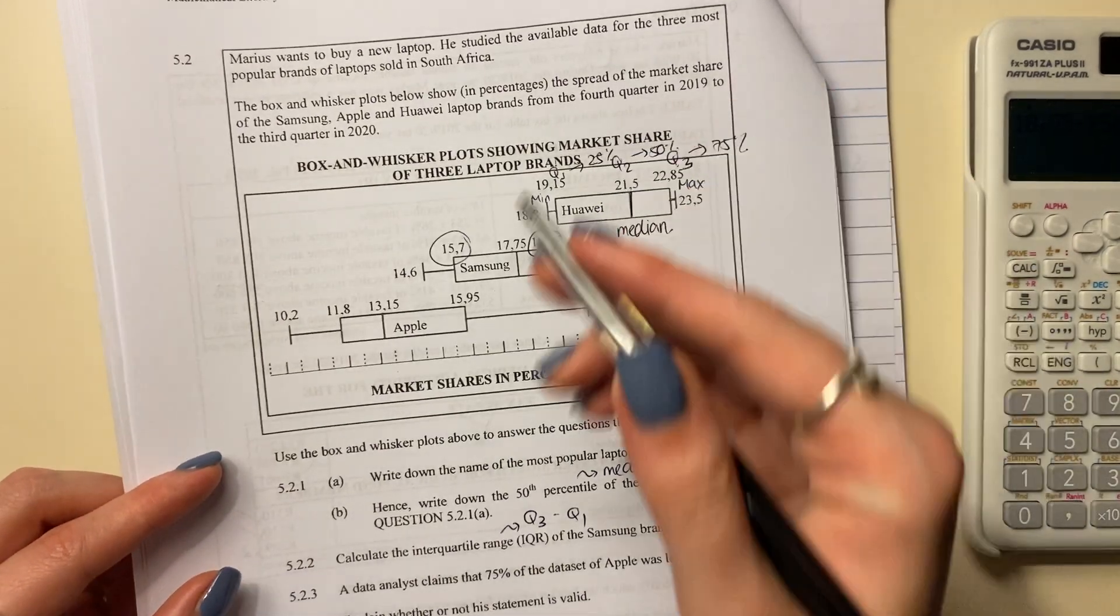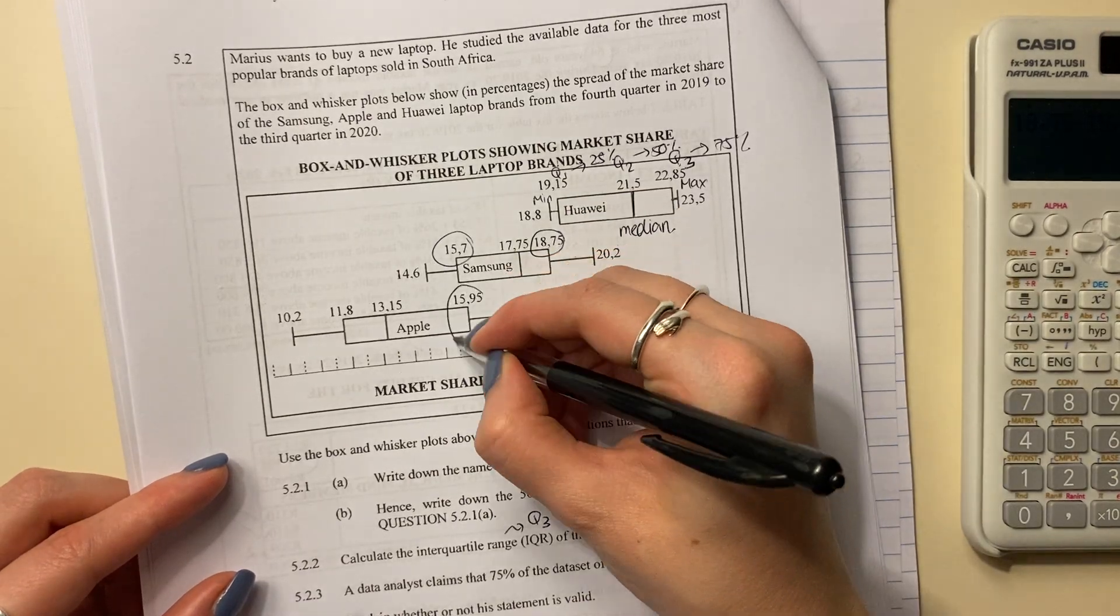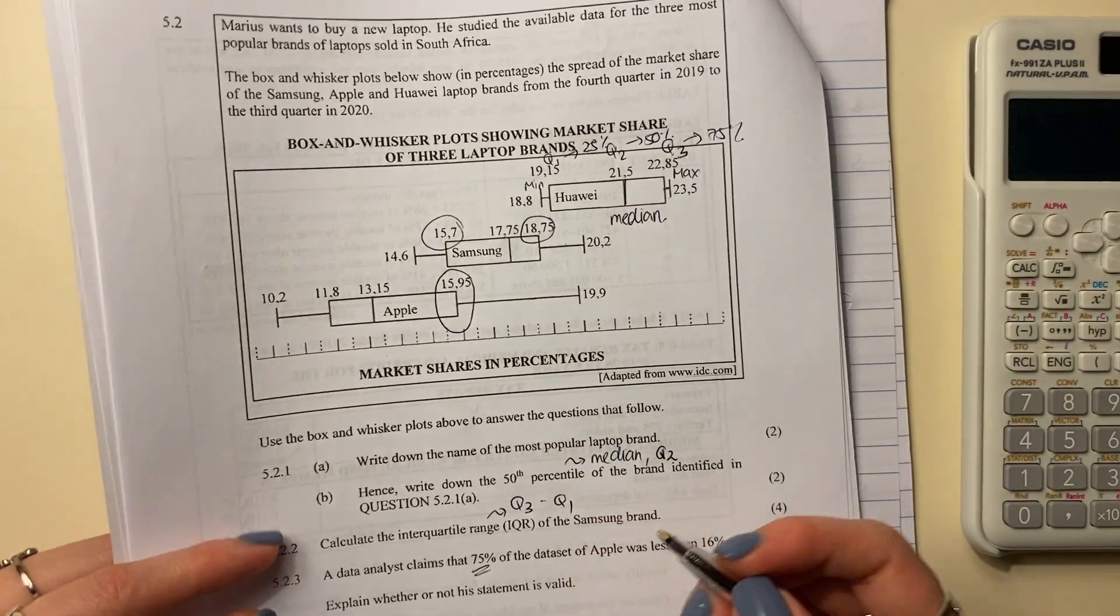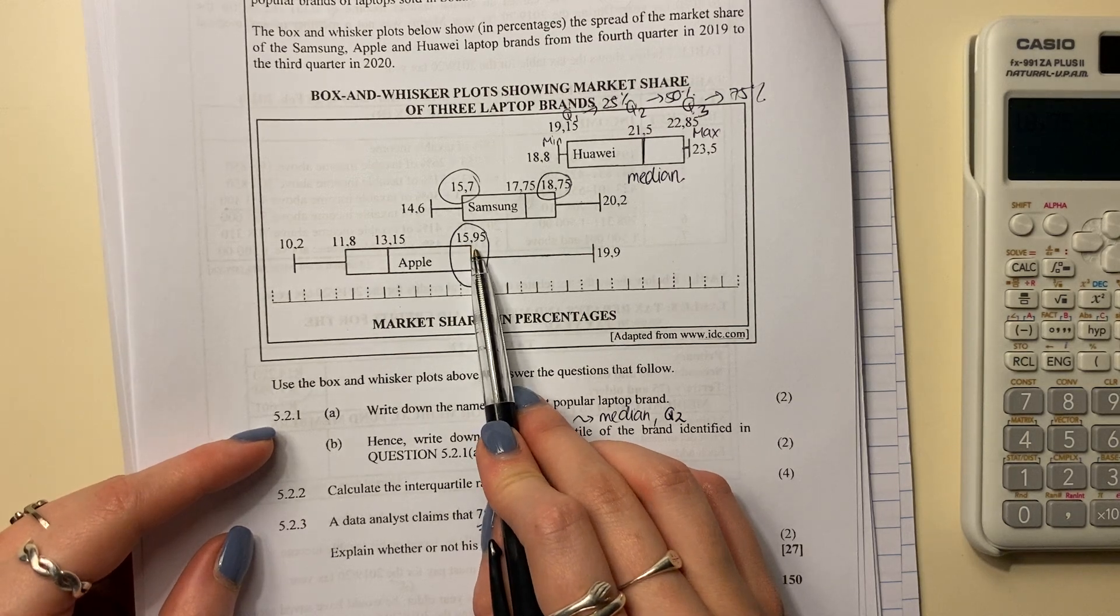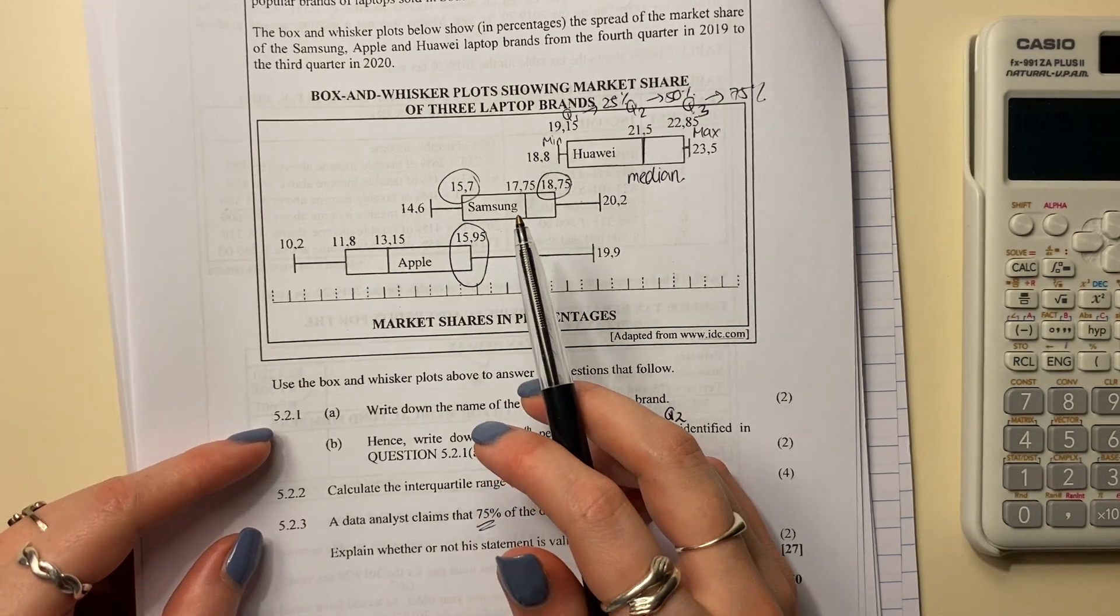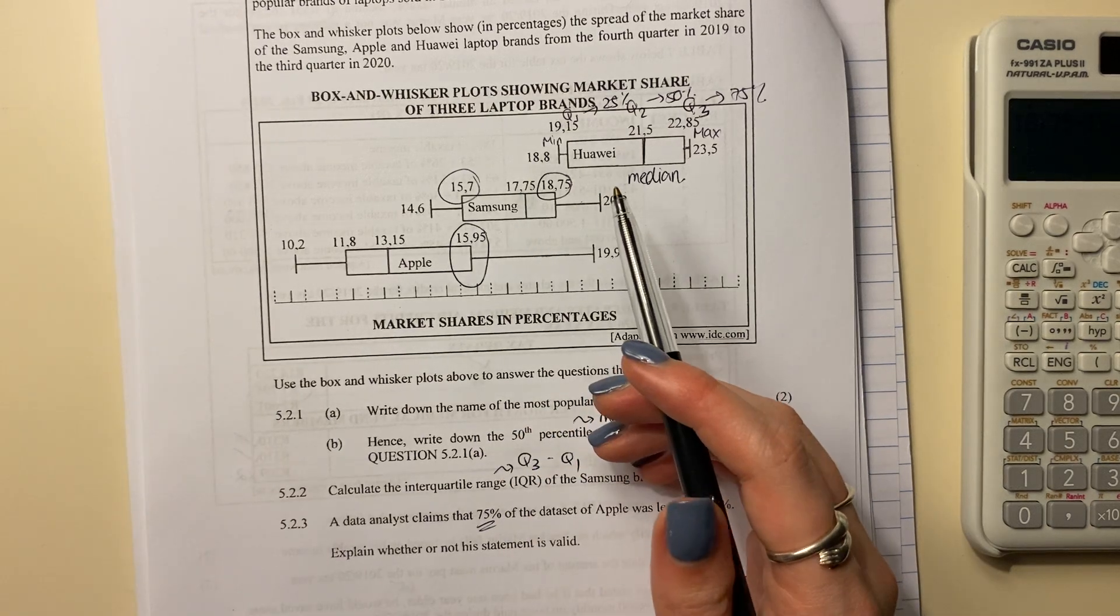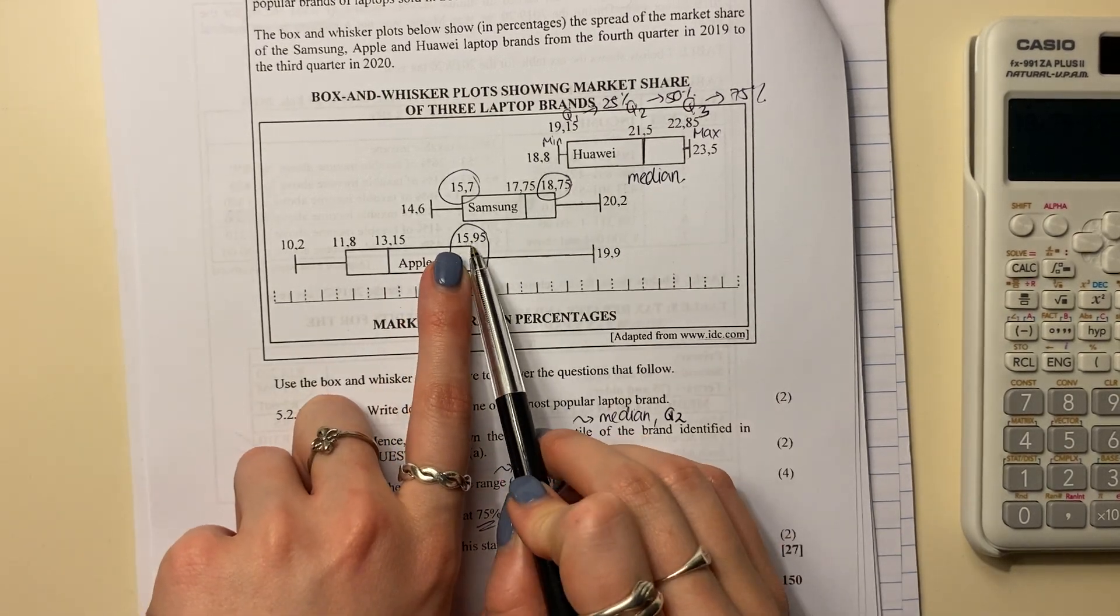So over here, quartile 3, which is talking about 75%, is 15.95%. Now you could be saying, mommy, what are you talking about, talking about all these percentages? So basically everything below 15.95%.